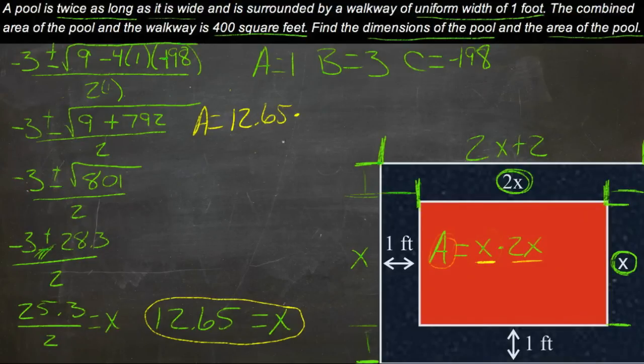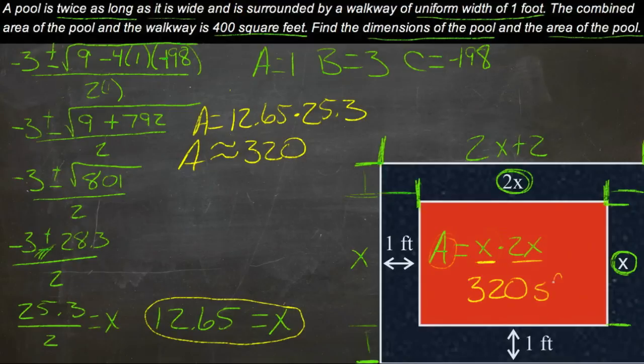12.65s, which is 25.3. We know that because we got 12.65 by dividing 25.3 by 2. 25.3, and 12.65 times 25.3 is just about 320. So the area of our pool is 320. 320 square feet.